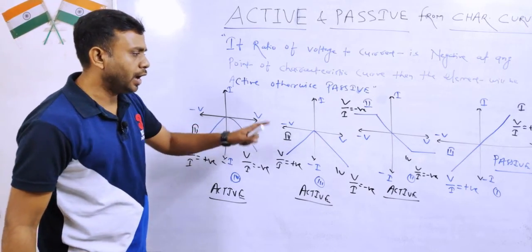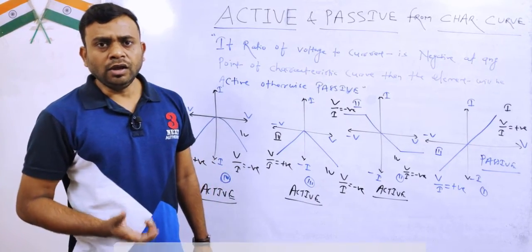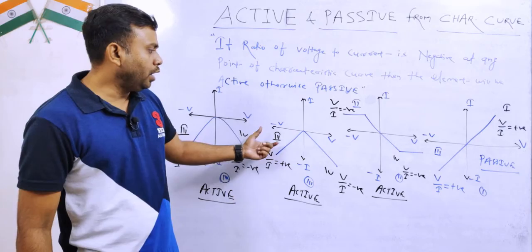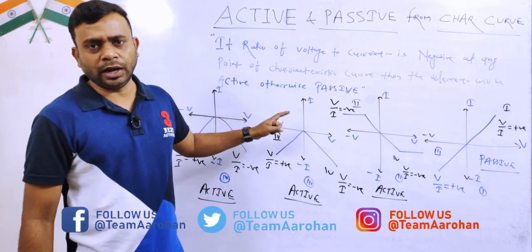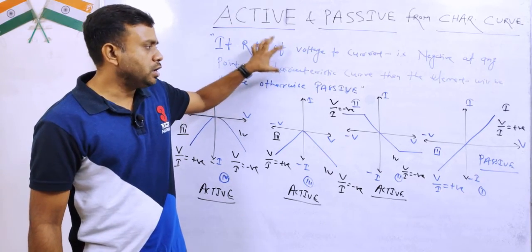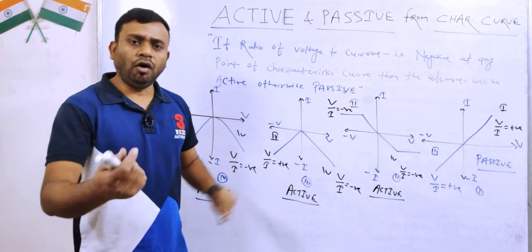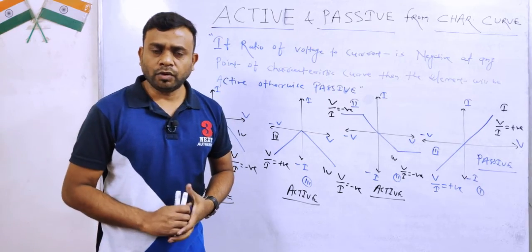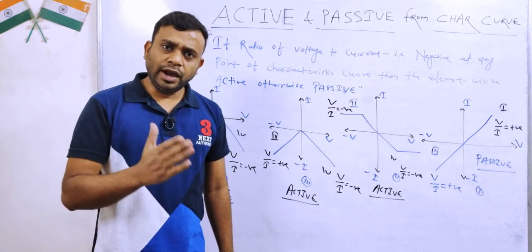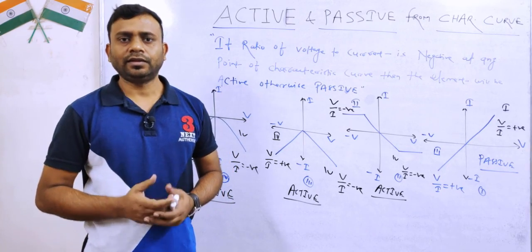यहाँ पर मैंने कुछ examples लिये हैं। जब आप examination में जाएंगे, हो सकता है different kind के characteristic curves वहाँ question में आये हों — आप ध्यान रखें, curve कैसा भी आया हो, concept same रहेगा। This is a very important kind of problem जो competitive examinations में कई बार आया है and in future examinations भी आ सकता है। Just focus on this concept — by that you can find in an easy way whether a curve is for an active element or for a passive element. Thank you very much.